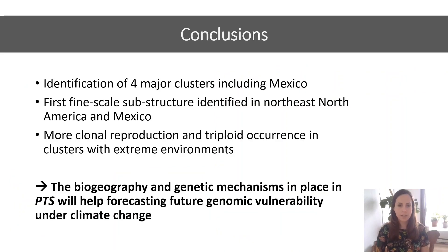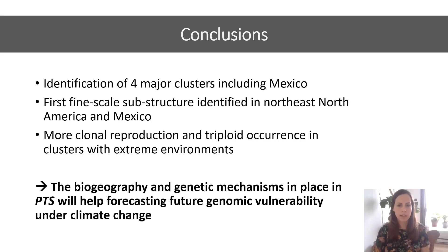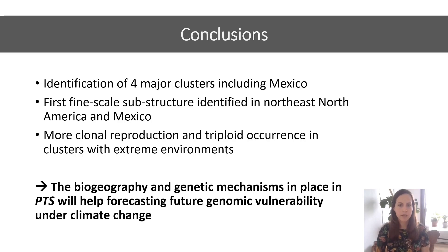To conclude, we identified four major clusters and found novel substructure in the Mexican and Northeast North America cluster. Moreover, we found that there is a higher occurrence of triploids and clonal reproduction in clusters that are prone to environmental stresses. Overall, understanding the biogeography and genetic mechanisms currently in place in aspen will help us predict the future genomic vulnerability of the species under climate change.